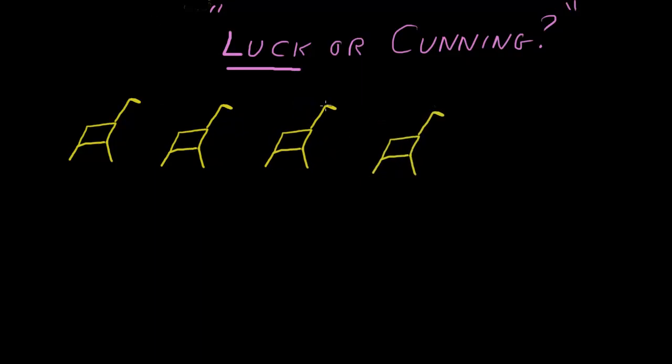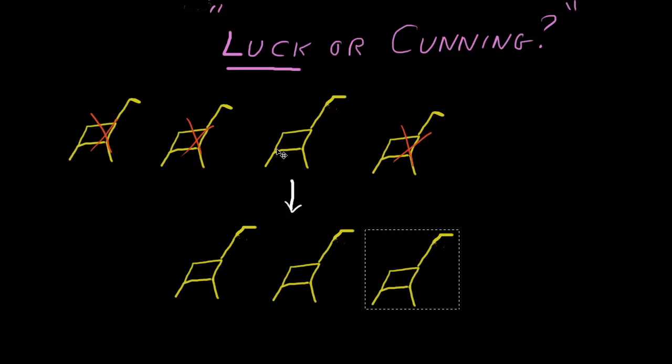Under natural selection, a proto-giraffe which happened to have been born with a slightly longer neck would have preferentially survived in hard times, since it would have been able to graze from the highest branches of the trees. So its fellow giraffes would have been negatively selected, and it would have been positively selected, and thus able to reproduce and pass on its character, its increased neck length, to its offspring, who would have been similarly advantaged. So this is classical natural selection, first selection, and then inheritance.